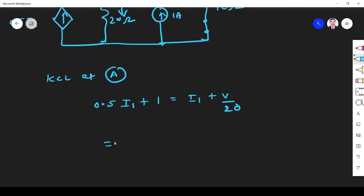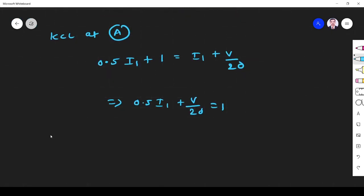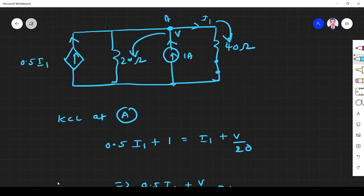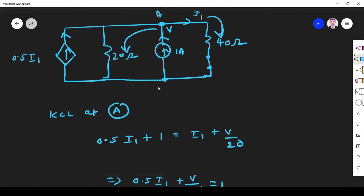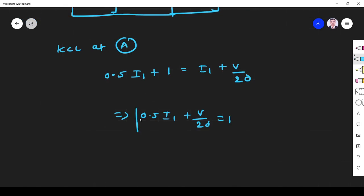Okay, if you simplify, what will happen is 0.5 I1 plus V by 20 is equal to 1. What about I1? See here we have one independent source. So we are having two, we need two equations. So I1, I don't know. So this is the equation. This equation has two variables. One is V and another is I1. So if you want to solve, I have an equation with two variables, you need two equations to solve.